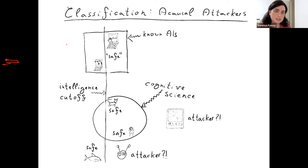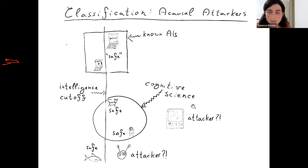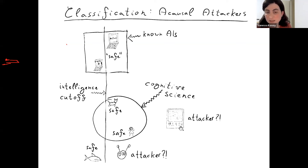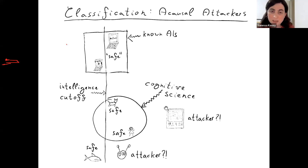We can say: anything that either falls under this intelligence threshold, in this box of known AIs, or in this circle of human-like agents, we consider safe. If there is any precursor outside of this region, then the hypothesis is not a correct hypothesis about the normal world — it might be a malign simulation hypothesis and is discarded.